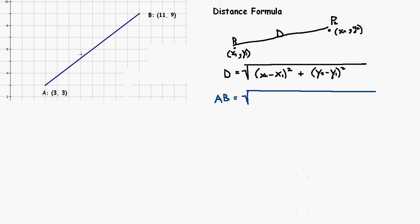So I would go AB is equal to the square root of (3 minus 11) squared. I'm taking the 3 from the x-coordinate of the A point and subtracting 11, which is the x-coordinate of the B point, take that difference and square it. I'm going to do the same thing with the y's: (3 minus 9) squared. If I compute everything on the right side of that equal sign, I should come up with the distance from A to B.